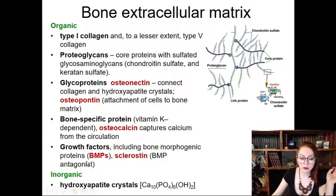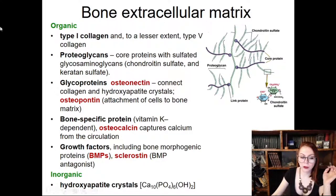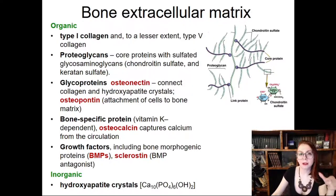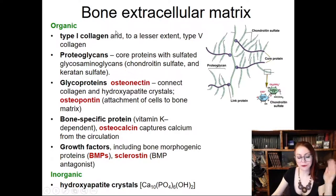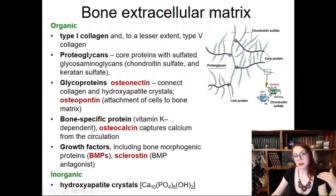That's why inside bones we also have lots of organic components. First of all, these are collagen type 1 fibers. Please remember the type of collagen because it is important — type 1 collagen forms thick bundles, like in fiber cartilage, and it helps to endure high mechanical overloads. Collagen is organized in a special way we'll discuss later. Except collagen, there are many other components in the ground substance: proteoglycans and glycoproteins.